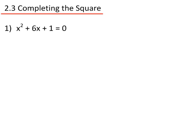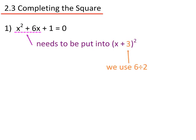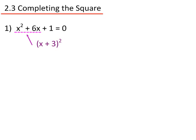Question 1: x squared plus 6x plus 1 equals 0. I need to get it into the format of x plus or minus something, all squared. Whatever the x term is — in this case 6 — you divide that by 2, which gives us 3. So now we have x plus 3, all squared.